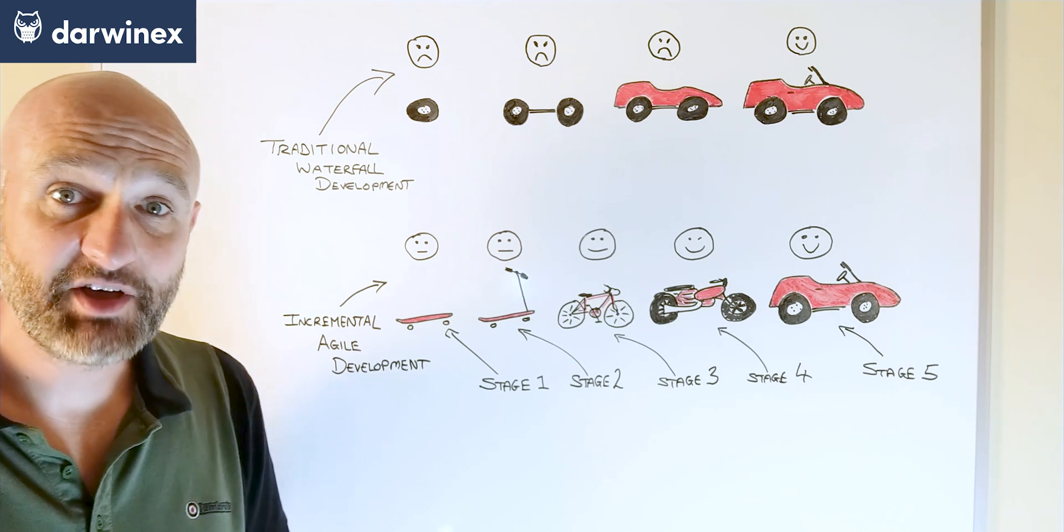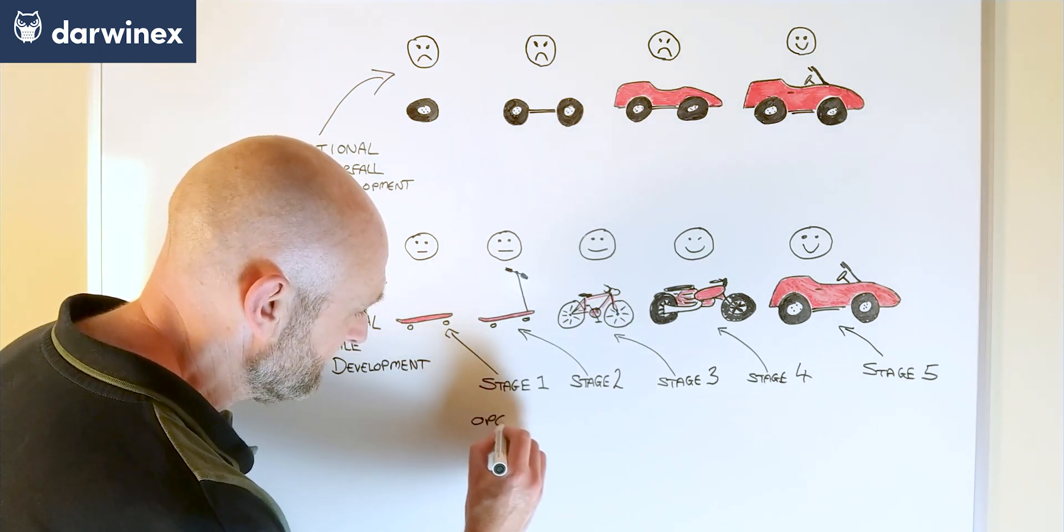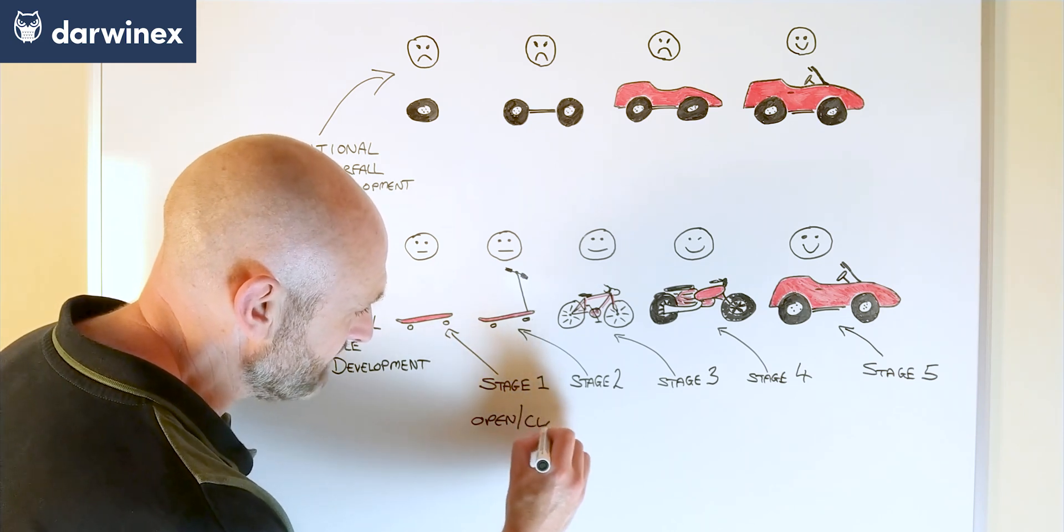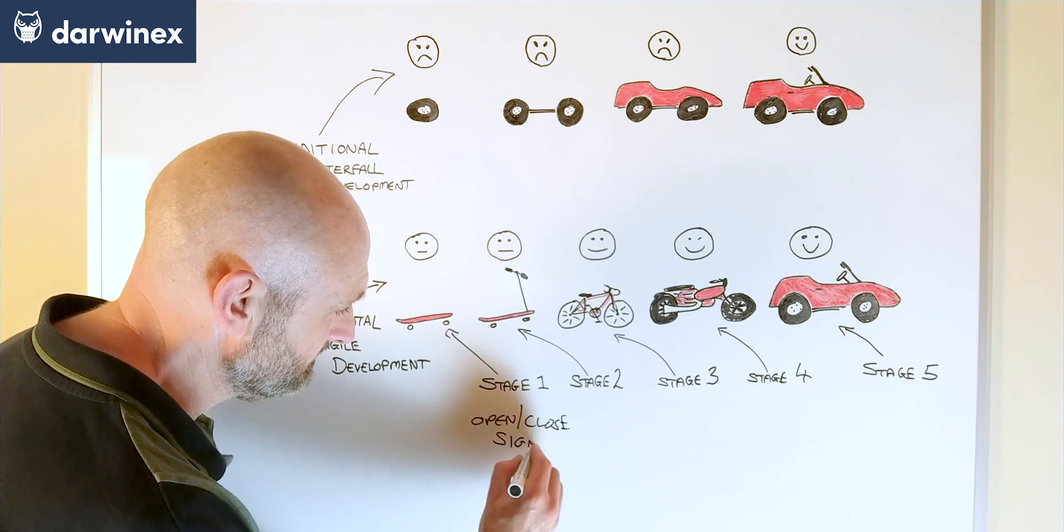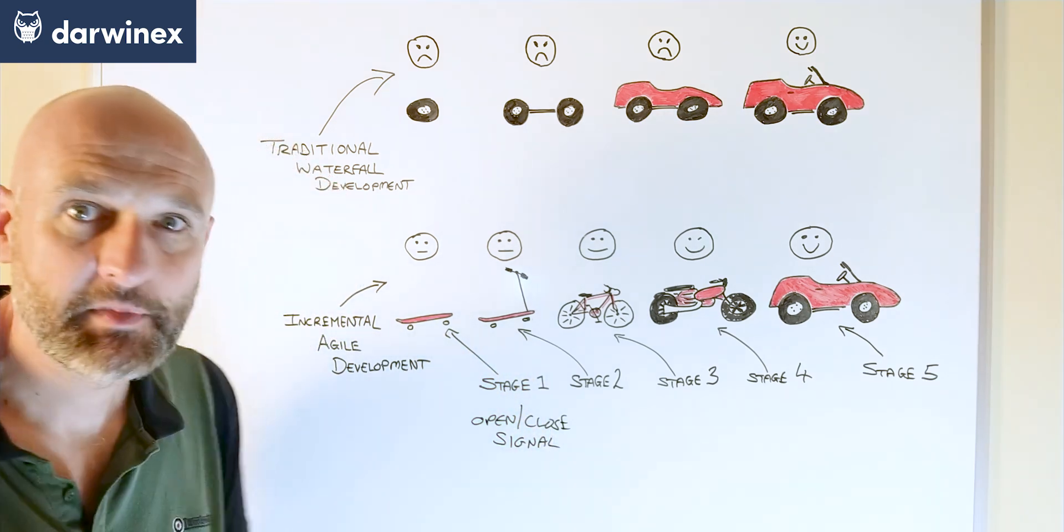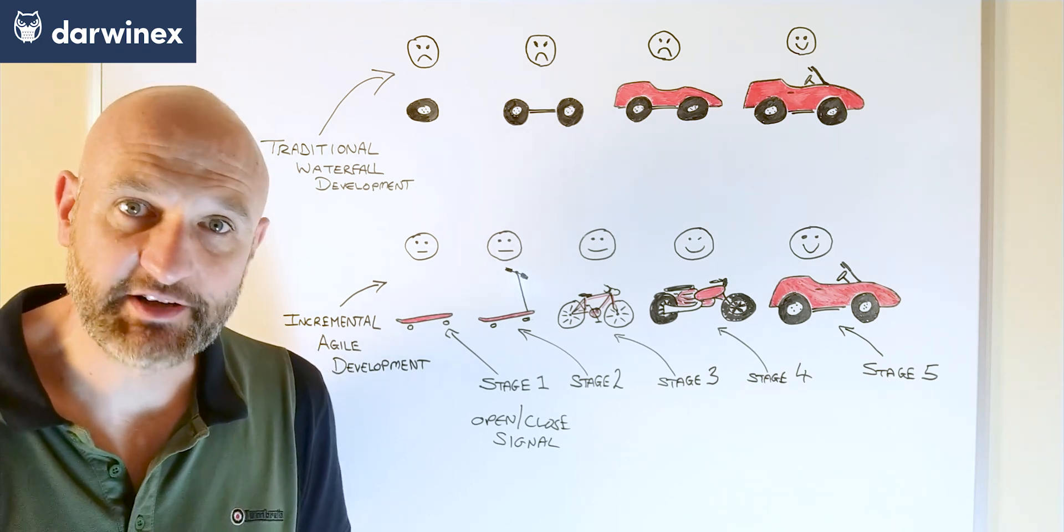So the approach that I take for the first stage when I'm developing any new system is that at stage one I will develop the open and the close signal. And that's it, nothing else, so no filters, no stop losses, no take profits, no triggers, nothing else.